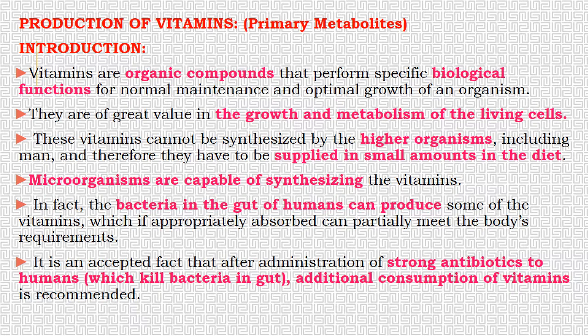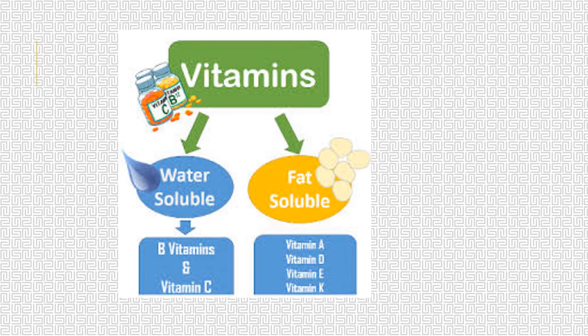Vitamins are naturally present in food sources, so consuming vitamin-rich foods allows them to reach our body, supporting growth and metabolism. Vitamins cannot be produced by humans, but microorganisms can synthesize them. For example, good bacteria present in our gut can synthesize specific vitamins. The two main types of vitamins are water-soluble and fat-soluble. Water-soluble vitamins include Vitamin B and Vitamin C, while fat-soluble vitamins include Vitamins A, D, E, and K.